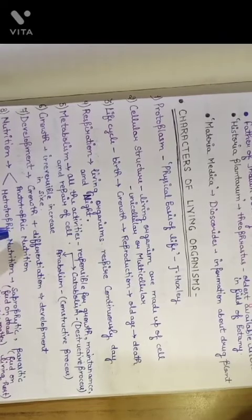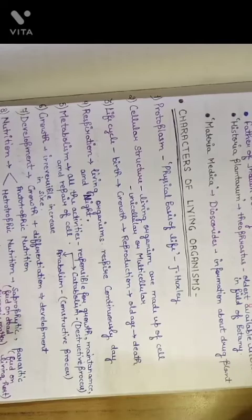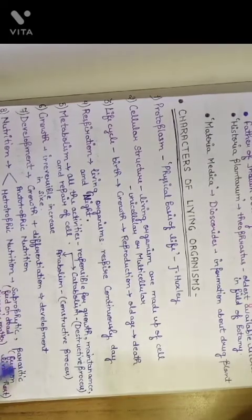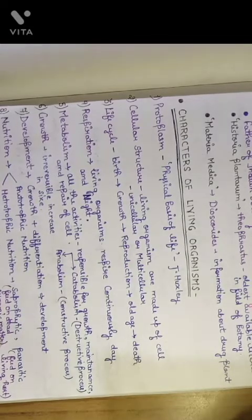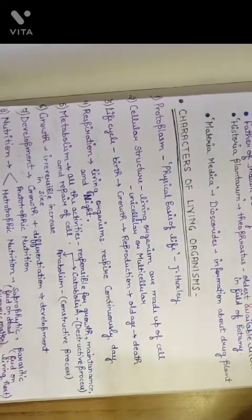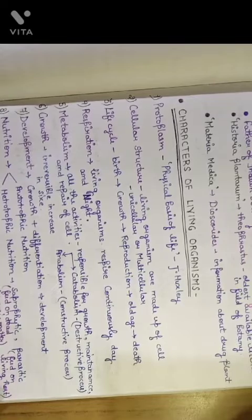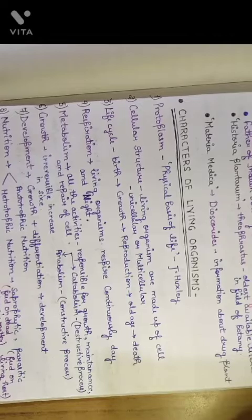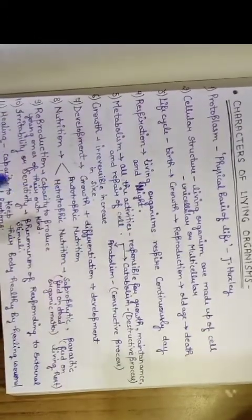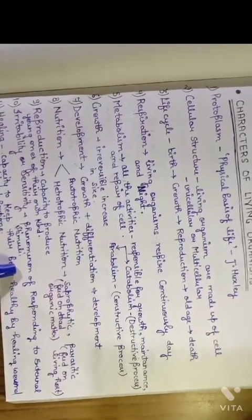Nutrition - there are two types: autotrophic nutrition and heterotrophic nutrition. Heterotrophic nutrition includes saprophytic and parasitic. Saprophytic means feeds on dead organic matter. Parasitic organisms feed on living host. Reproduction - capacity to produce young ones of their own kind. Irritability or sensitivity - phenomenon of responding to external stimuli.